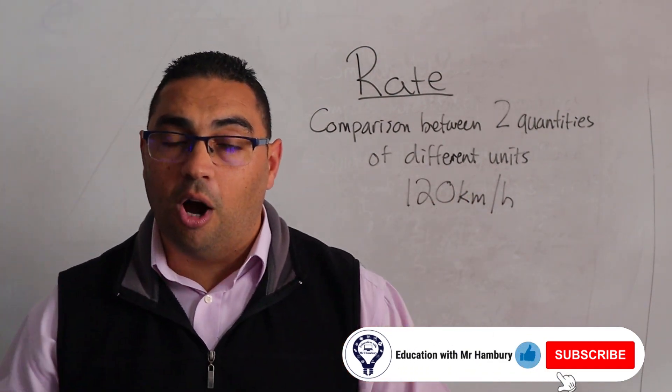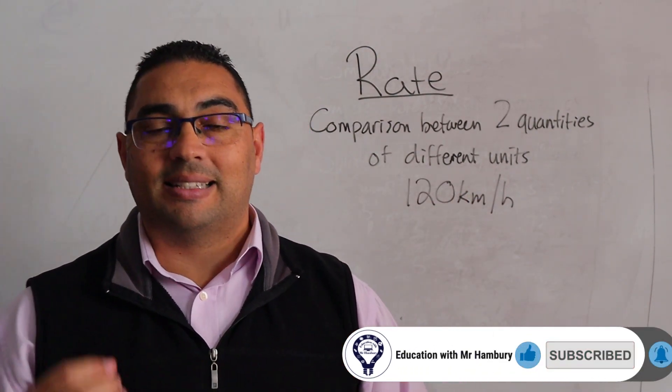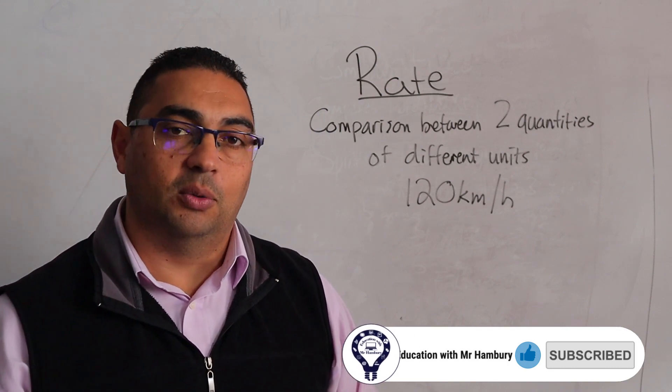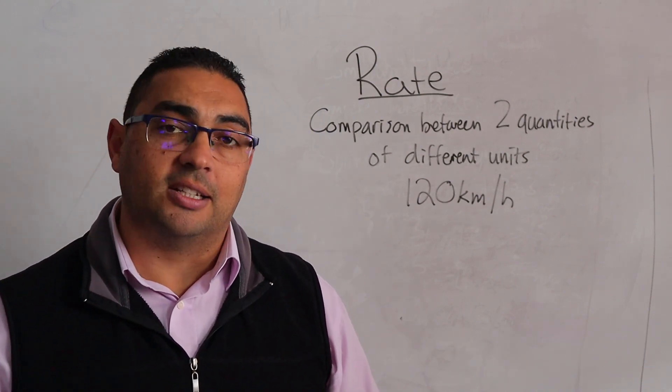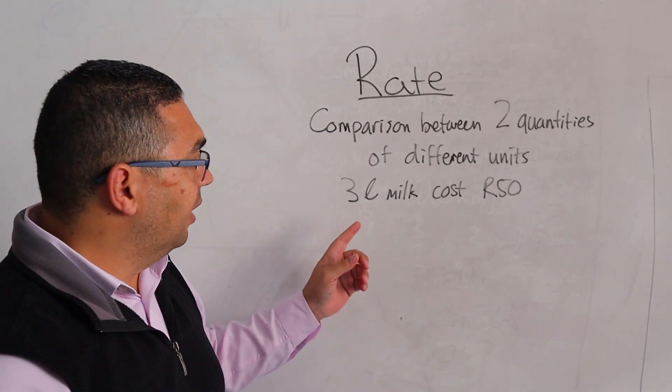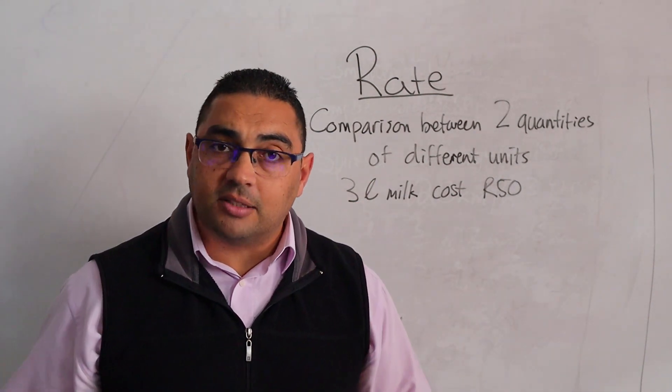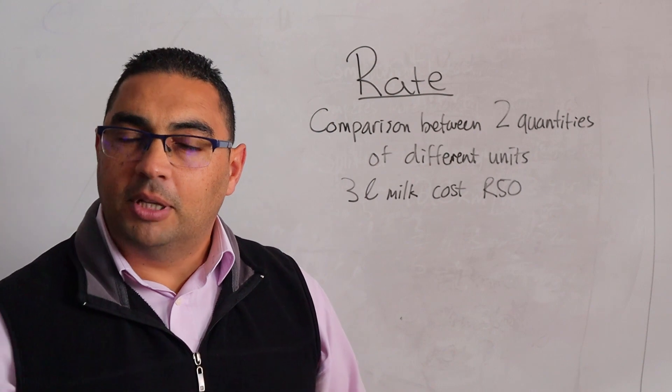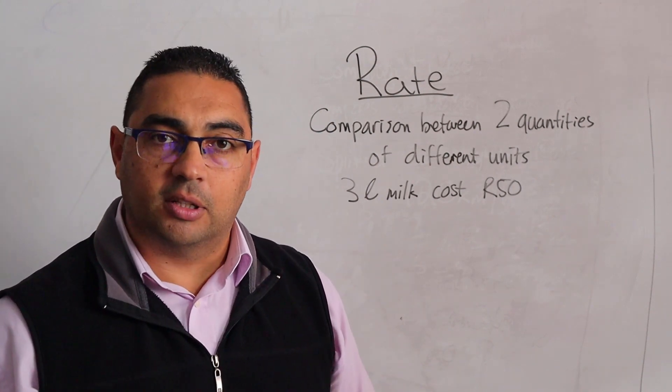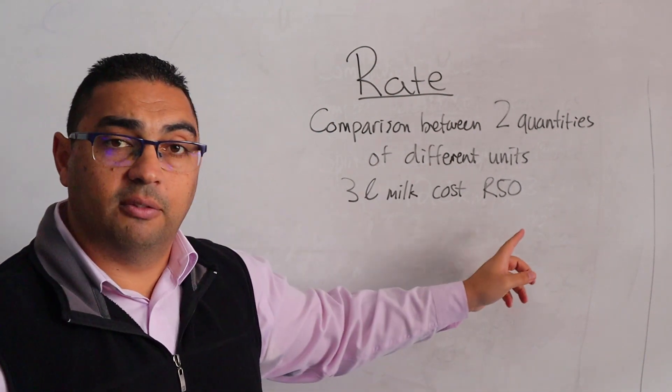This is why whenever you give your answer in rate, you must have the units included as well. Let's look at an example: three liters of milk costing 50 rand. How much would one liter of milk cost? If three liters cost 50 rand, what am I going to do?